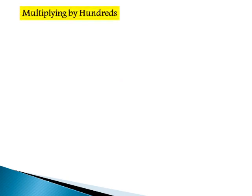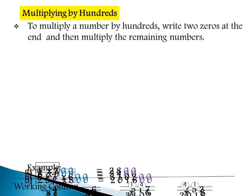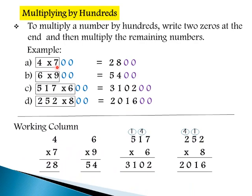Multiplying by hundreds. To multiply a number by hundreds, write two zeros at the end and then multiply the remaining numbers. For example, 4 times 700: first multiply 4 times 7 equals 28, put two zeros at the end, so the answer is 2800. 6 times 900: first multiply 6 times 9 equals 54, put two zeros at the end, so the answer is 5400. In the same way, 517 times 600 equals 3,10,200. You can use the working column to multiply bigger numbers — 252 times 800 equals 2,01,600.